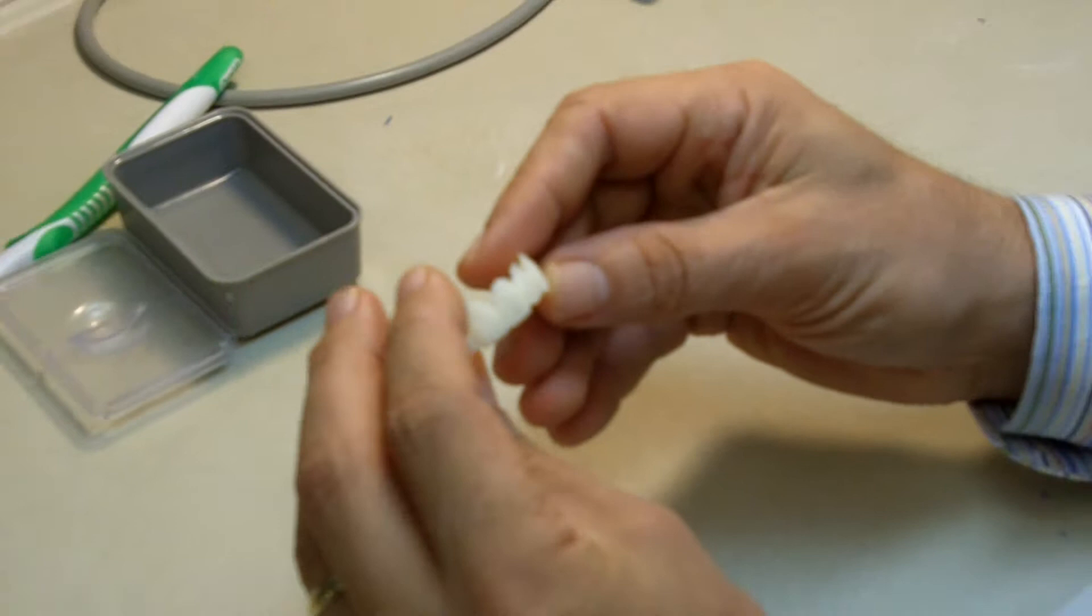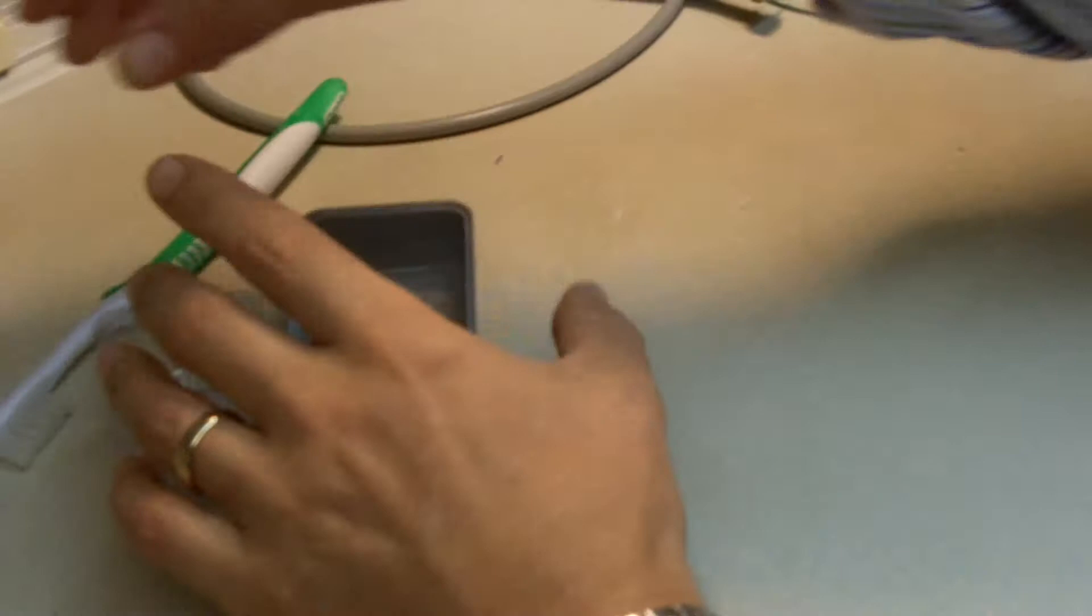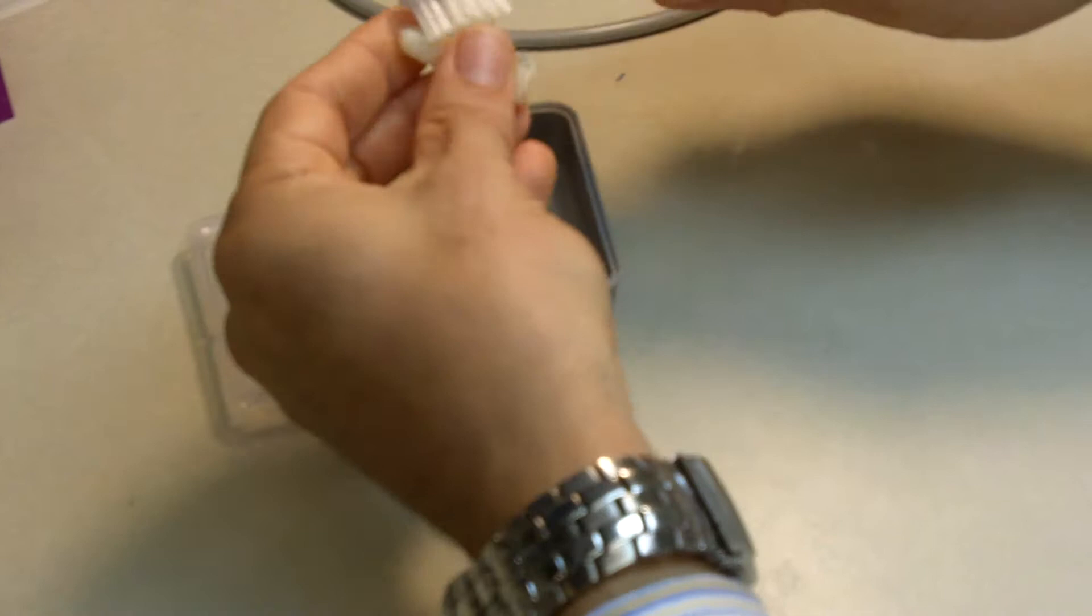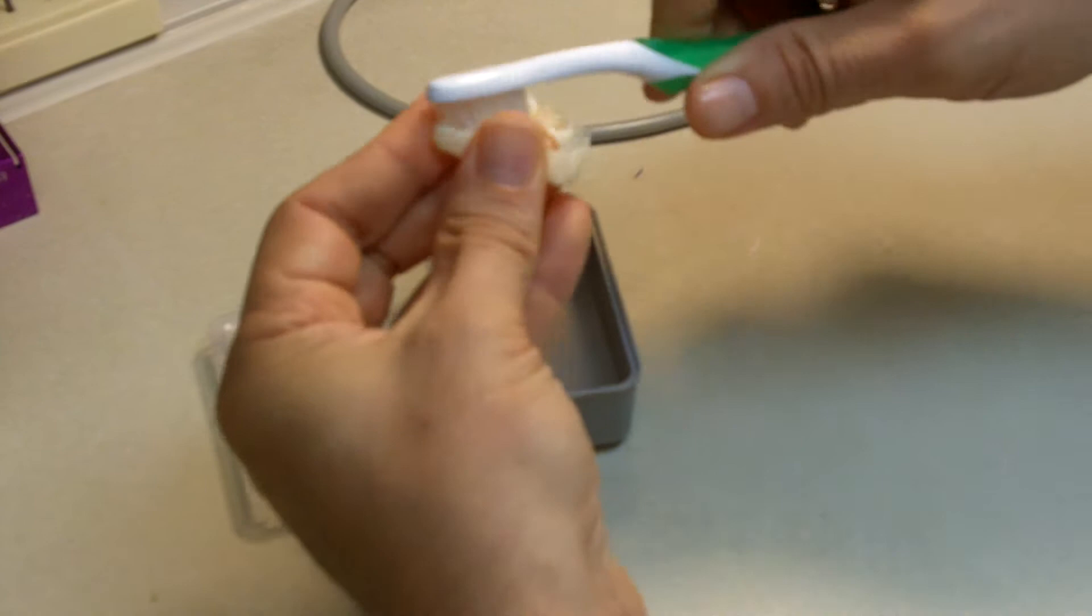I'm going to put this in a little alcohol bath first. I'm pouring the alcohol, just some rubbing alcohol, isopropyl alcohol, and I got a toothbrush. I'm going to brush with alcohol the whole provisional.